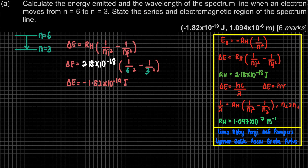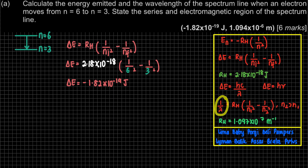The second part is to calculate the wavelength of the spectrum line. We already have delta E. For wavelength, there are two formulas: delta E = hc/λ, or 1/λ. Since we already have delta E, we're going to substitute it into delta E = hc/λ. H is Planck's constant — refer back to the list of constants — and C is the speed of light, 3×10⁸.